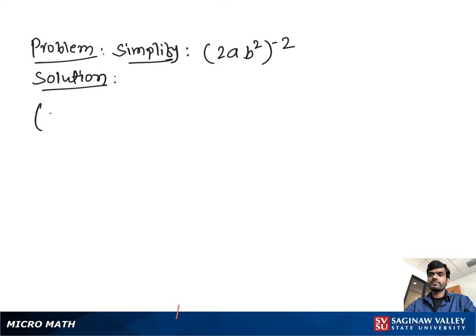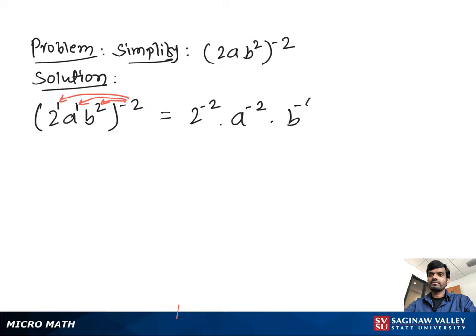Simplify (2ab²) to the negative 2. We first distribute the exponents: 2 to the negative 2, times a to the negative 2, times b to the negative 4.